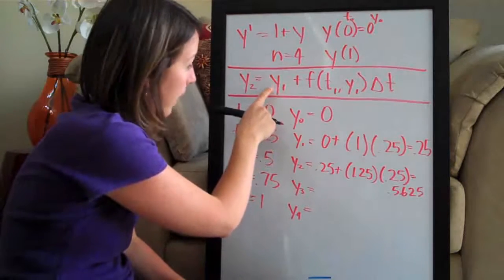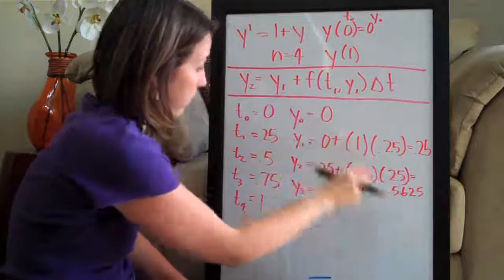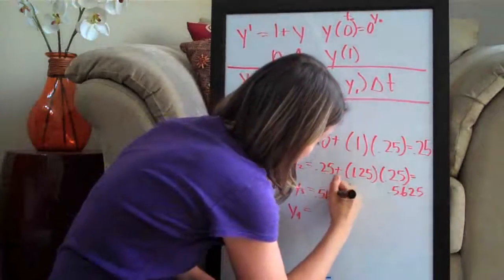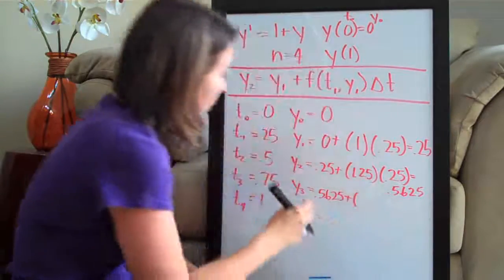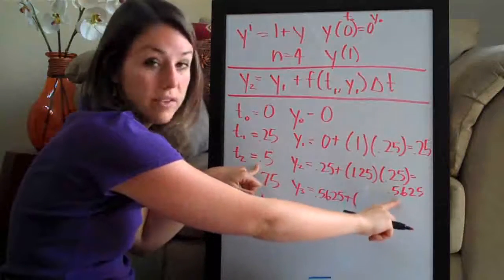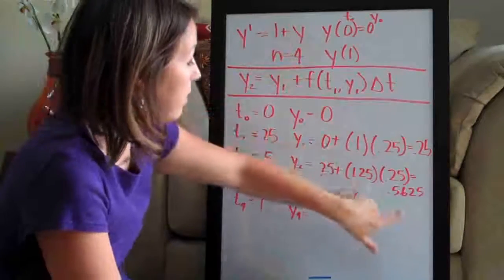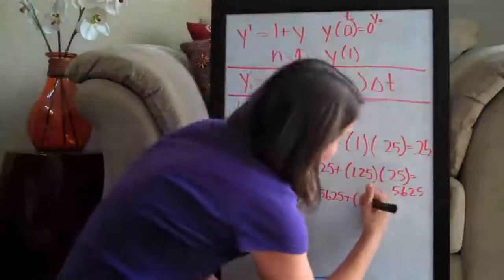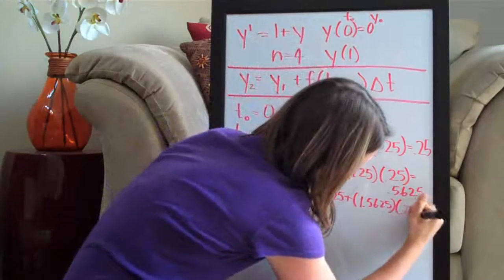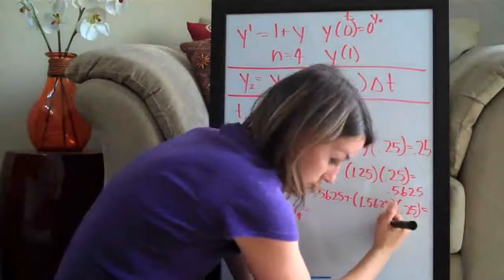So remember we plug in the value from the previous answer. So this first one is 0.5625 plus, remember the value of the function when we plug in the previous point. So the previous point is 0.5, 0.5625. Of course we don't plug in the t because there's no t's in our equation. So we have 1 plus 0.5625 which of course is 1.5625 and then times delta t which is 0.25. And our answer is 0.953125.